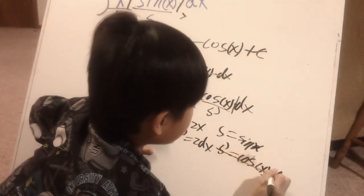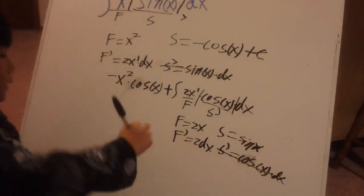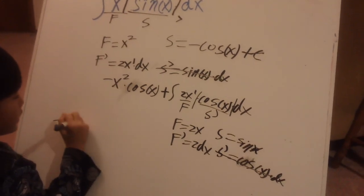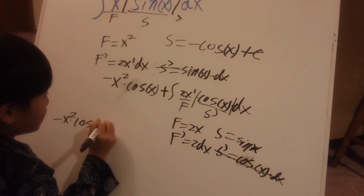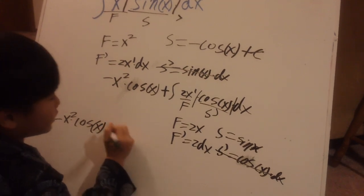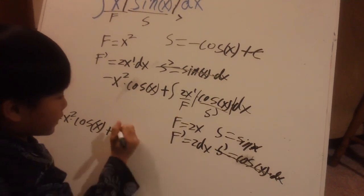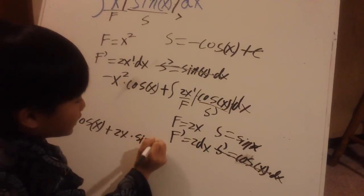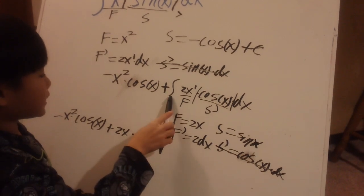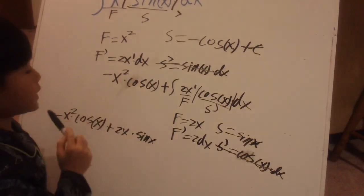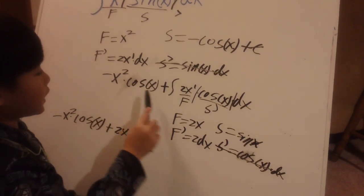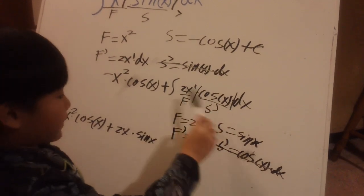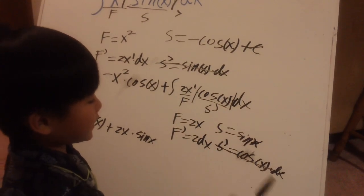And then you could put plus. So then you can cross this out if you want. And then you could copy this. Minus x² cos x, plus that. So then it would be 2x sin x. And you would be wondering why this has an integral sign and this doesn't. It is because this one already went up and this one should go up too. But you can actually go up right now. So you have to do first and second twice.